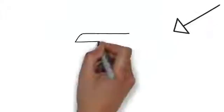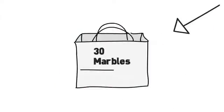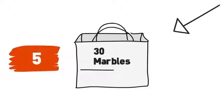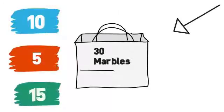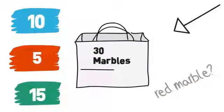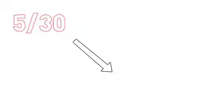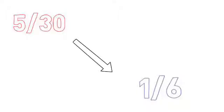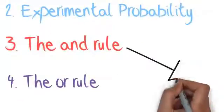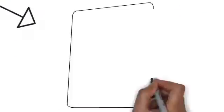Experimental probability — if you have 30 marbles in a bag, and we know that there are 5 that are red, 10 that are blue, and 15 that are green, what are the chances of getting a red marble? There are a total of 30 marbles in the bag, only 5 of which are red, therefore 5 out of 30 is our probability. We can cancel this fraction down from 5 out of 30 to 1 sixth.